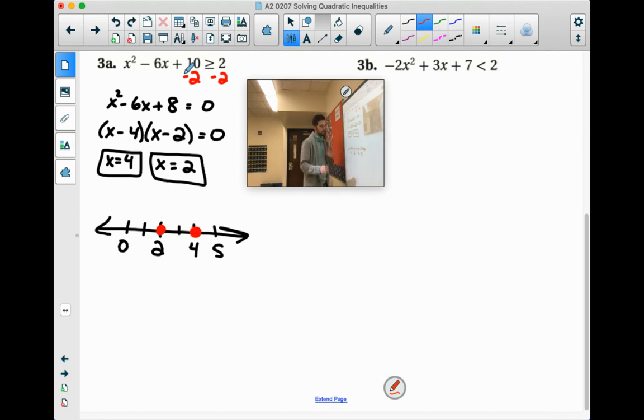So now we've got to pick some test points. Let's try 0 because 0 is always one of the easier ones. So 0 squared minus 6 times 0 plus 10 greater than or equal to 2. All this stuff, 0 squared, 6 times 0 is just 0.